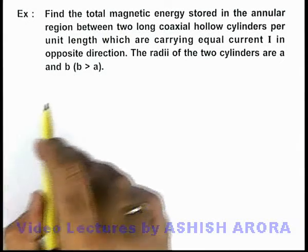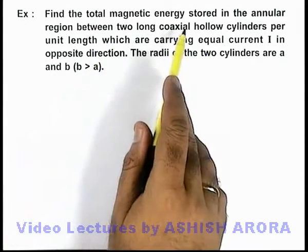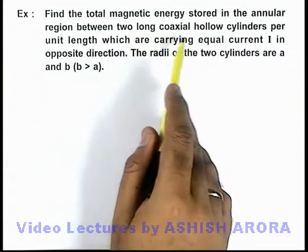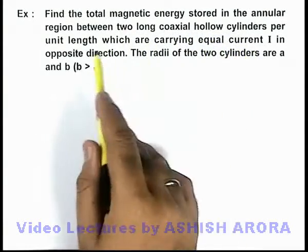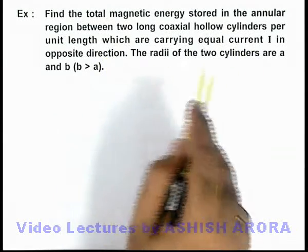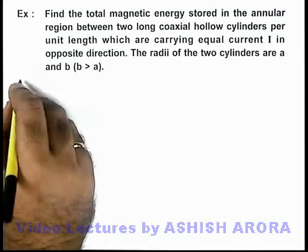In this example, we are required to find the total magnetic energy stored in the annular region between two long coaxial hollow cylinders per unit length which are carrying equal currents I in opposite direction. The radii of the two cylinders are given as a and b.